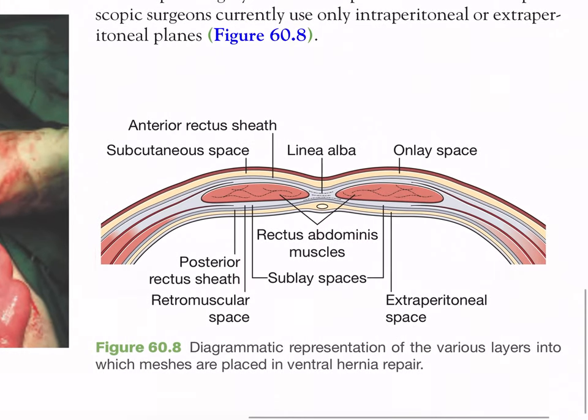Figure 60.8 is a diagrammatic representation of the various layers into which meshes are placed in ventral hernia repair. Anteriorly from outside to inside: subcutaneous space (onlay space), anterior rectus sheath, linea alba with the two rectus abdominis muscles, then below the rectus abdominis muscle are the sublay spaces, posterior rectus sheath, retromuscular space, and extraperitoneal space.